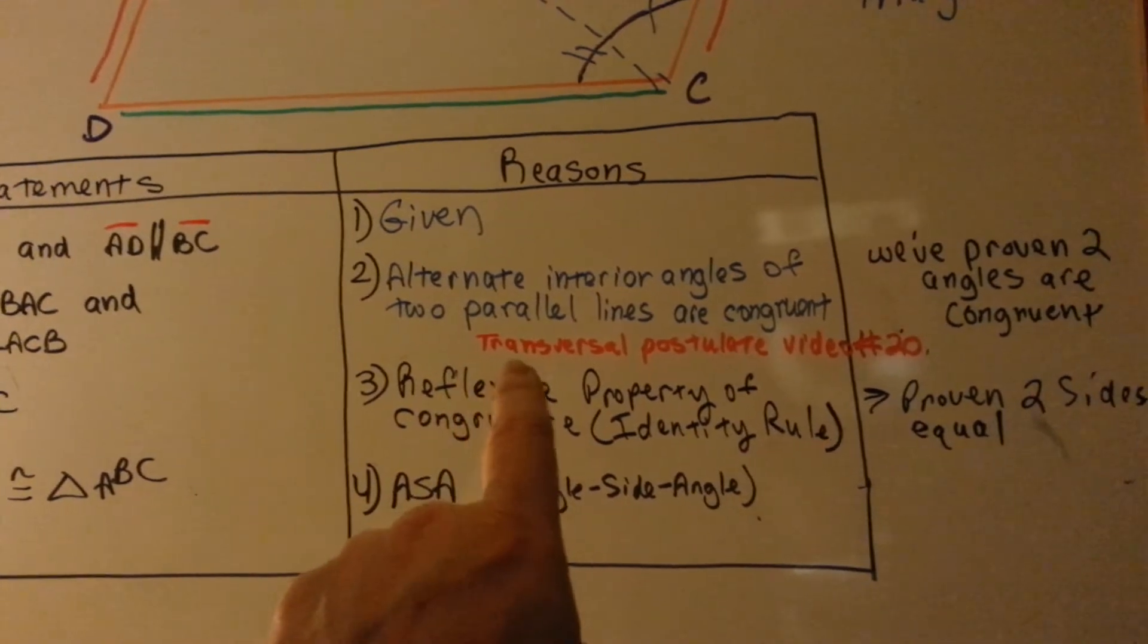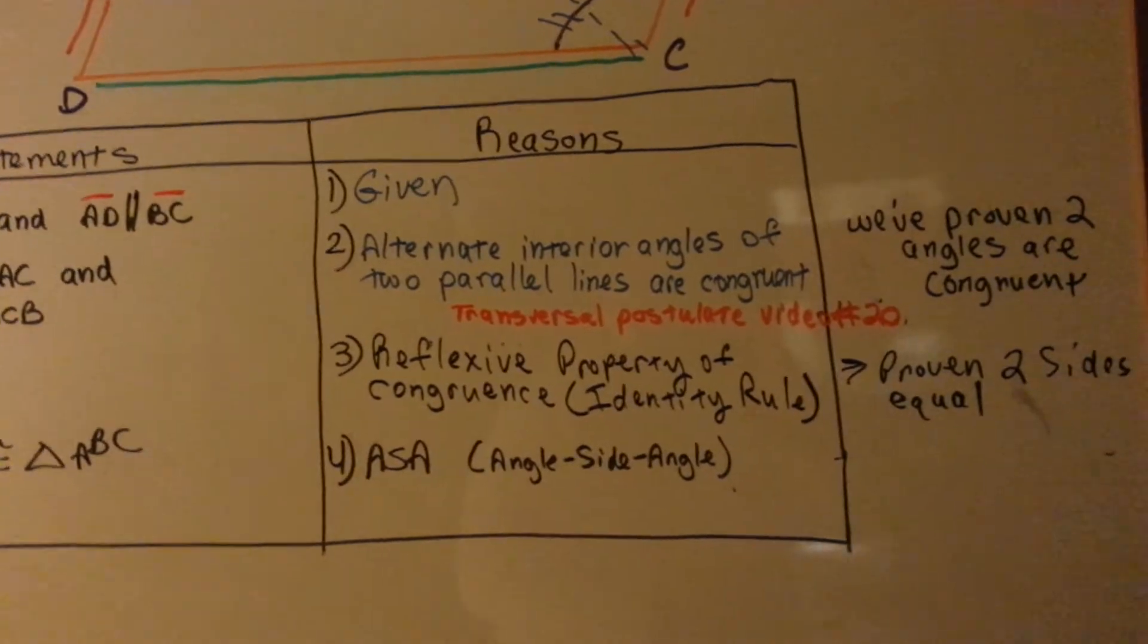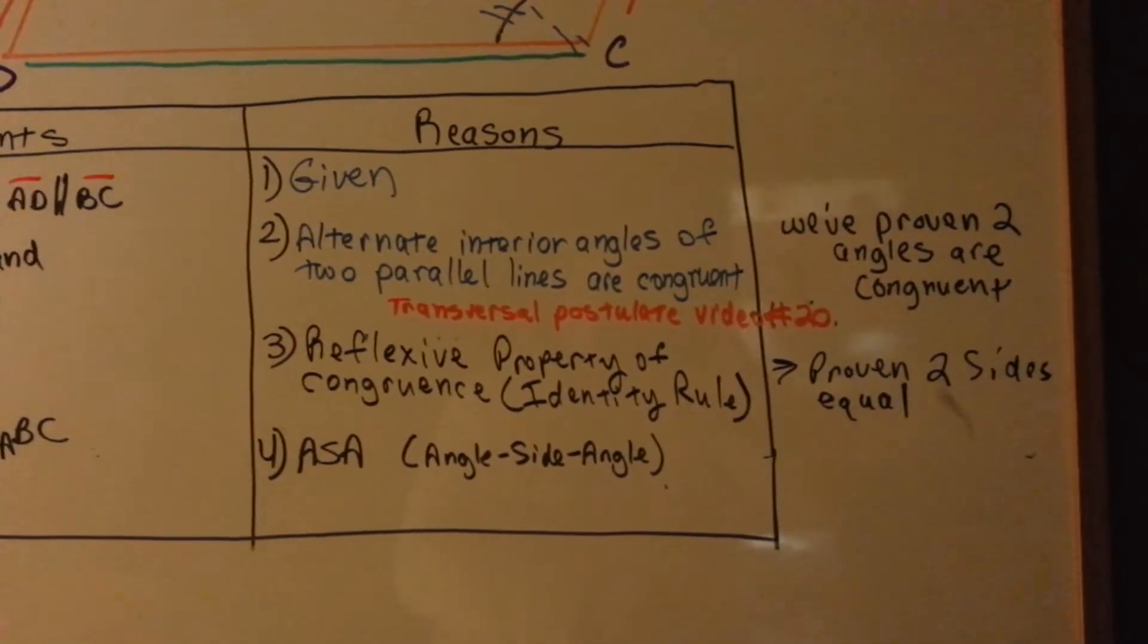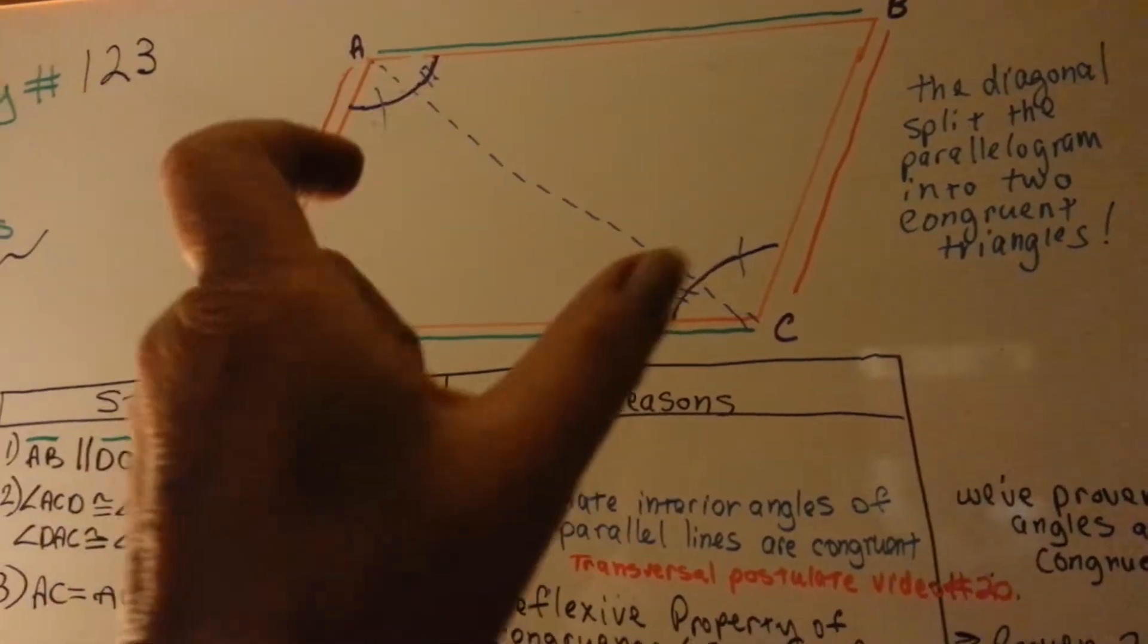If you're confused about this, I did a transversal postulate video, number 20, that you can watch to catch up to what that means. So, now we've proven that two angles are congruent. Those one and those ones.